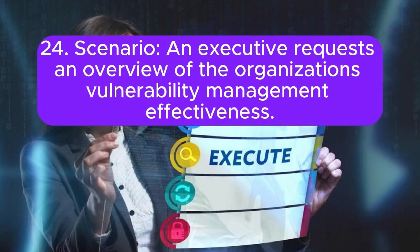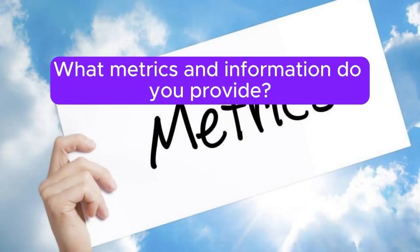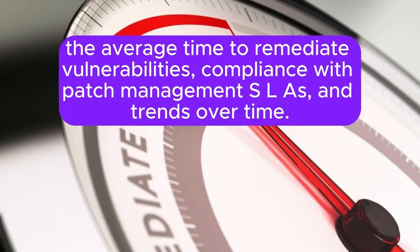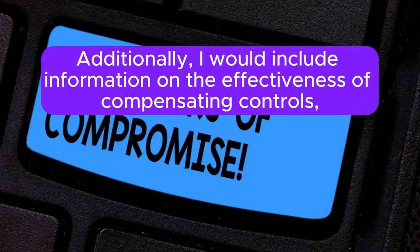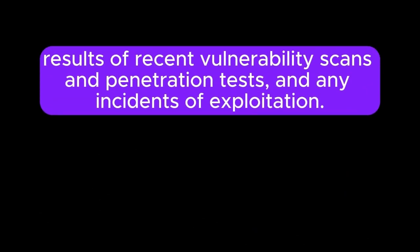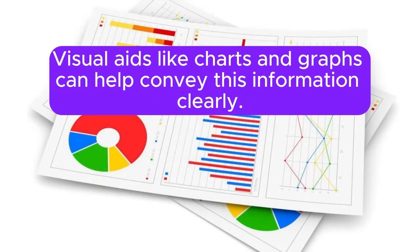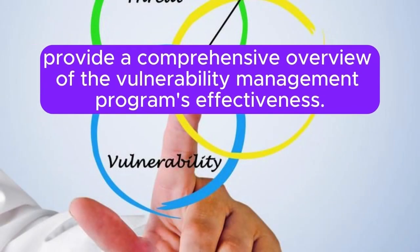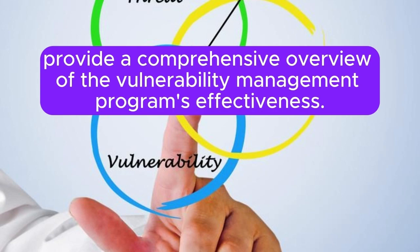Scenario 24: An executive requests an overview of the organization's vulnerability management effectiveness. What metrics and information do you provide? I would provide key metrics such as the number of vulnerabilities identified categorized by severity, the average time to remediate vulnerabilities, compliance with patch management SLAs, and trends over time. Additionally, I would include information on the effectiveness of compensating controls, results of recent vulnerability scans and penetration tests, and any incidents of exploitation. Visual aids like charts and graphs can help convey this information clearly. An executive summary highlighting key findings, risks, and improvement initiatives would provide a comprehensive overview of the vulnerability management program's effectiveness.